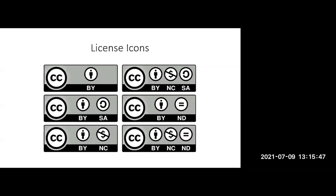Under each of those small circles there are two letters. Each icon has a different image in it. The letters BY, SA, NC, and ND each proclaim a specific use or restriction. So we're going to look at what these different uses are for these six licenses.